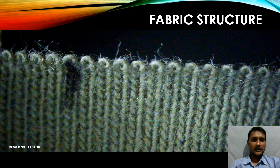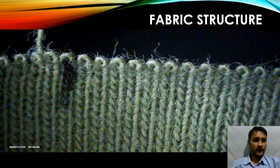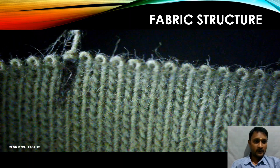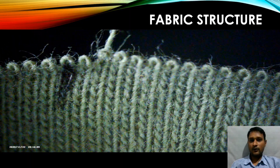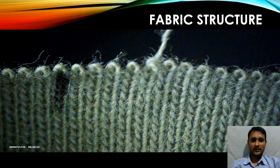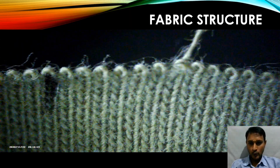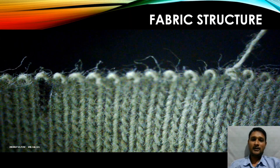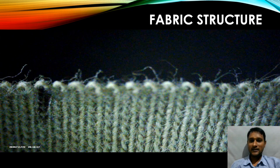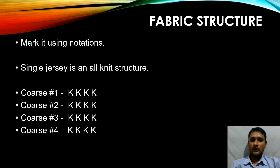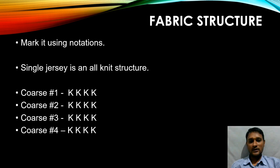Let us start unraveling course number four. Even course number four is with all knit structures. You can see the complete loop is getting unraveled from the previously knitted loop — this is a knit loop. So for a single jersey fabric, it is a plain structure with all knit structure. All the courses will be with only the knit structure, so we call it single jersey.